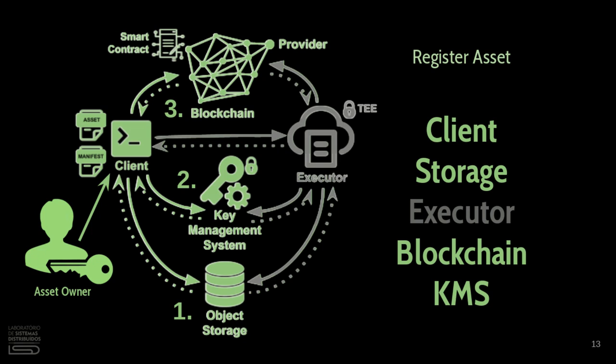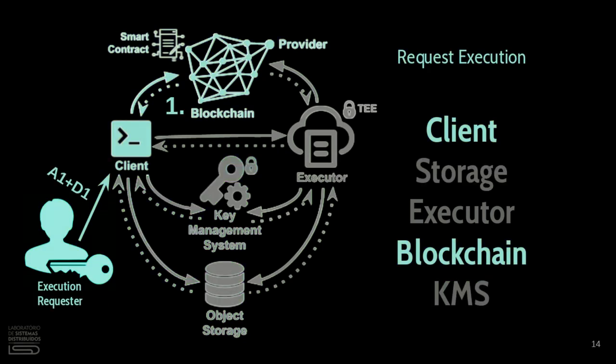Our second operation in DNAT is the execution request. The execution requester will ask the blockchain to execute an application A1 over some data D1. The traceability property of blockchain comes in here, because every request for execution is logged on the blockchain and accountability becomes possible in the future.